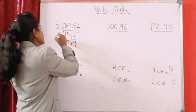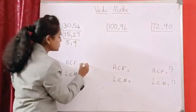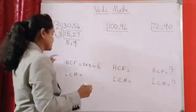Now, our HCF is this 2 into 3. 2 into 3 is our HCF. 6 is our HCF.